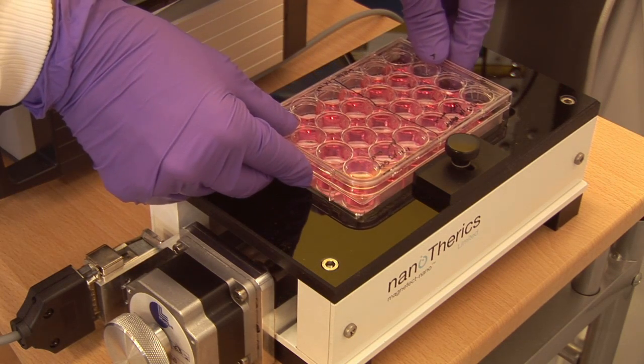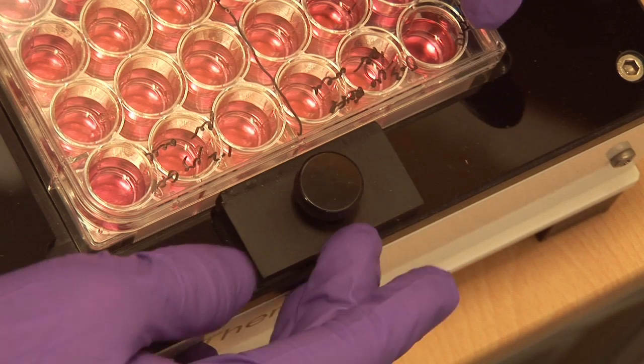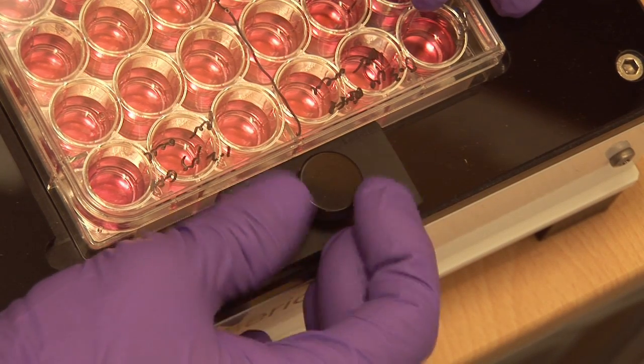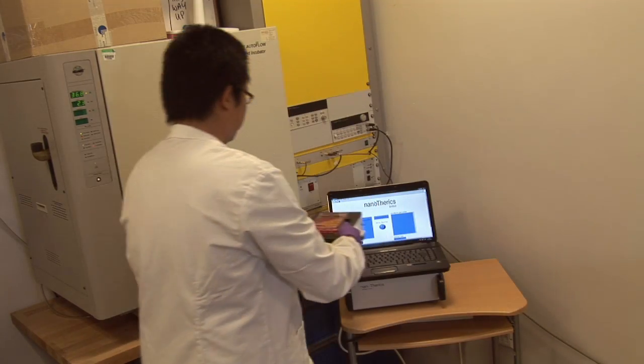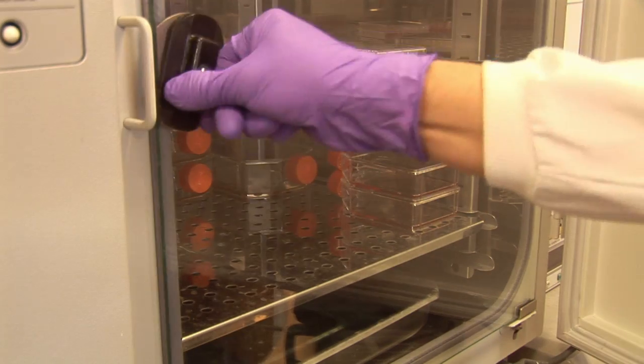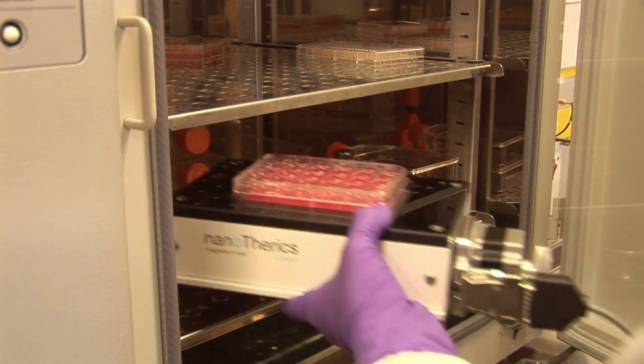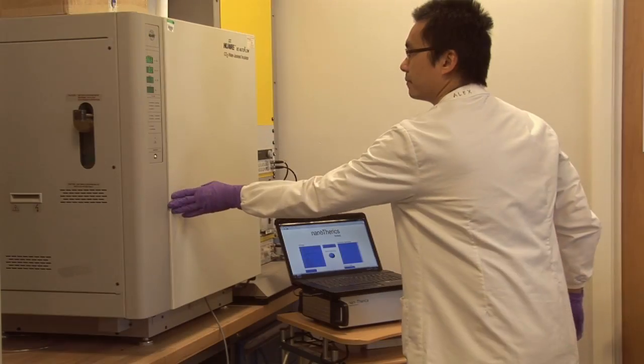Place the tissue culture plate onto the Magnafect Nano and align the wells with the magnet plates underneath and clamp in place. Now place the Magnafect Nano into an incubator for the duration of the experiment. The cable simply runs through the door of the incubator which maintains the seal.